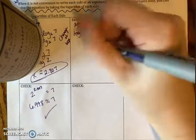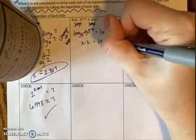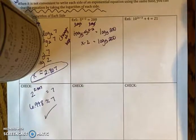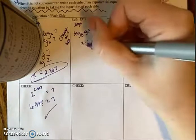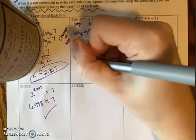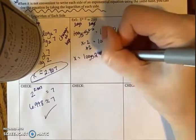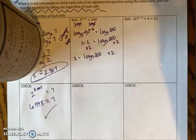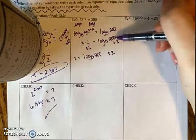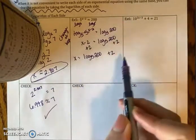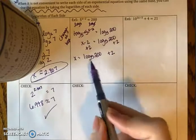Log base 5 of 5 cancels out, and I'm just left with x minus 2 equals log base 5 of 200. The whole goal is to get x by itself. I'm currently subtracting 2, so I need to add 2 to each side. That gives me x equals log base 5 of 200 plus 2. You cannot — I repeat — you cannot combine that 200 and 2. You also should not combine this whole thing in your calculator at once, because this is a log base 5.